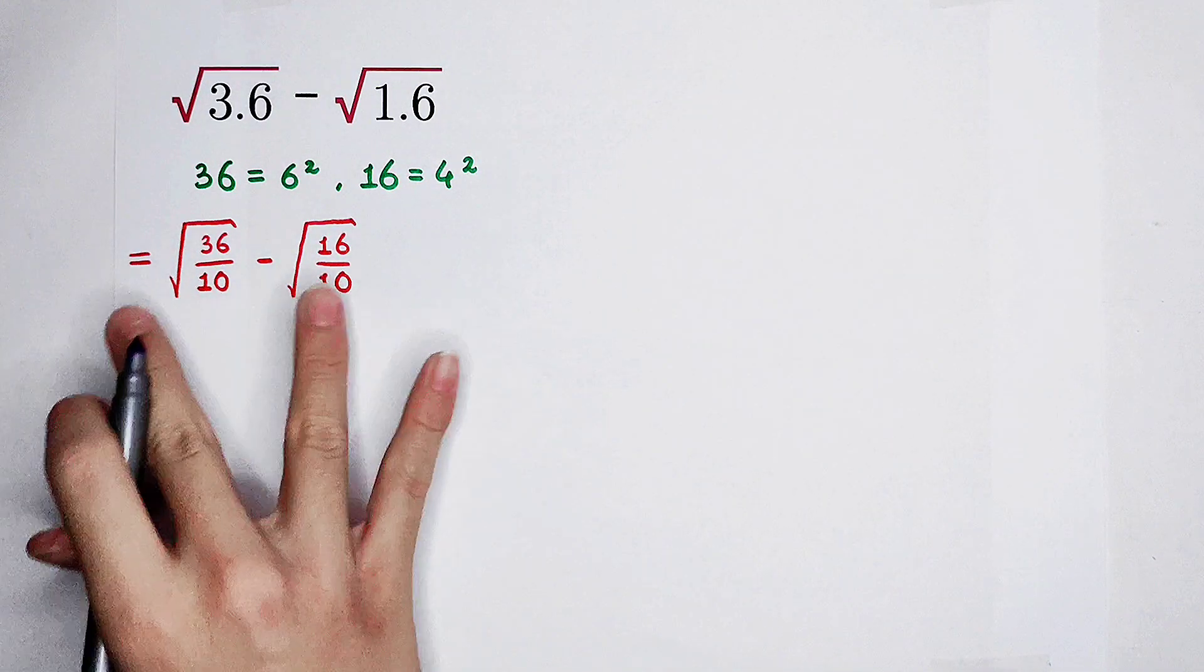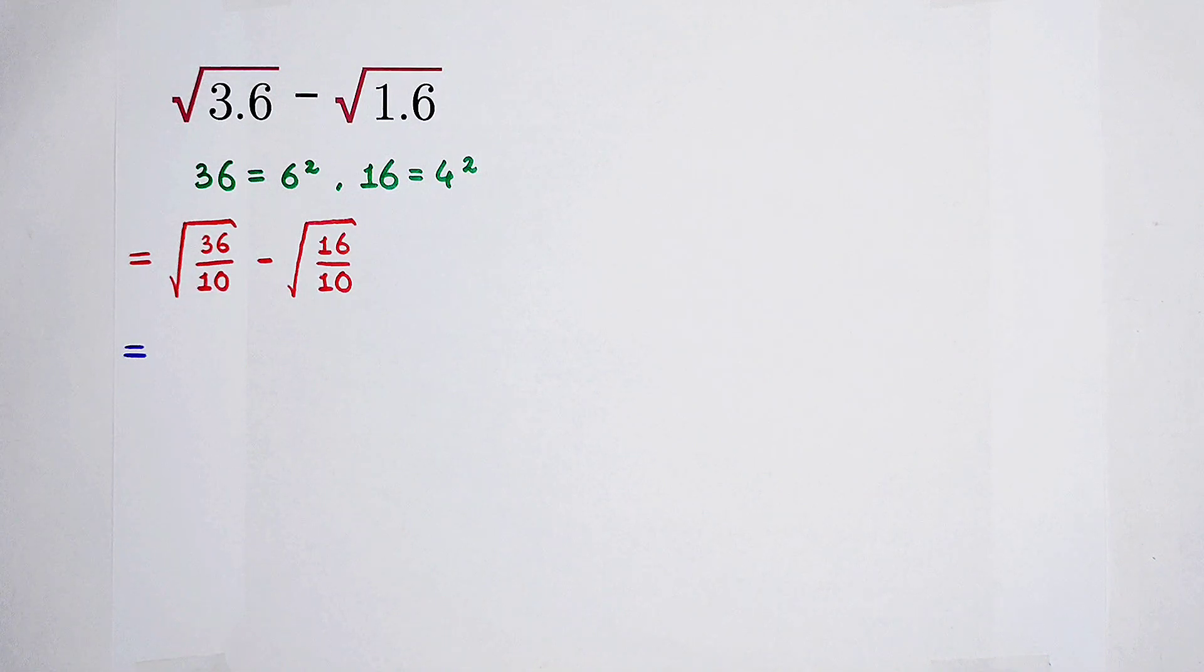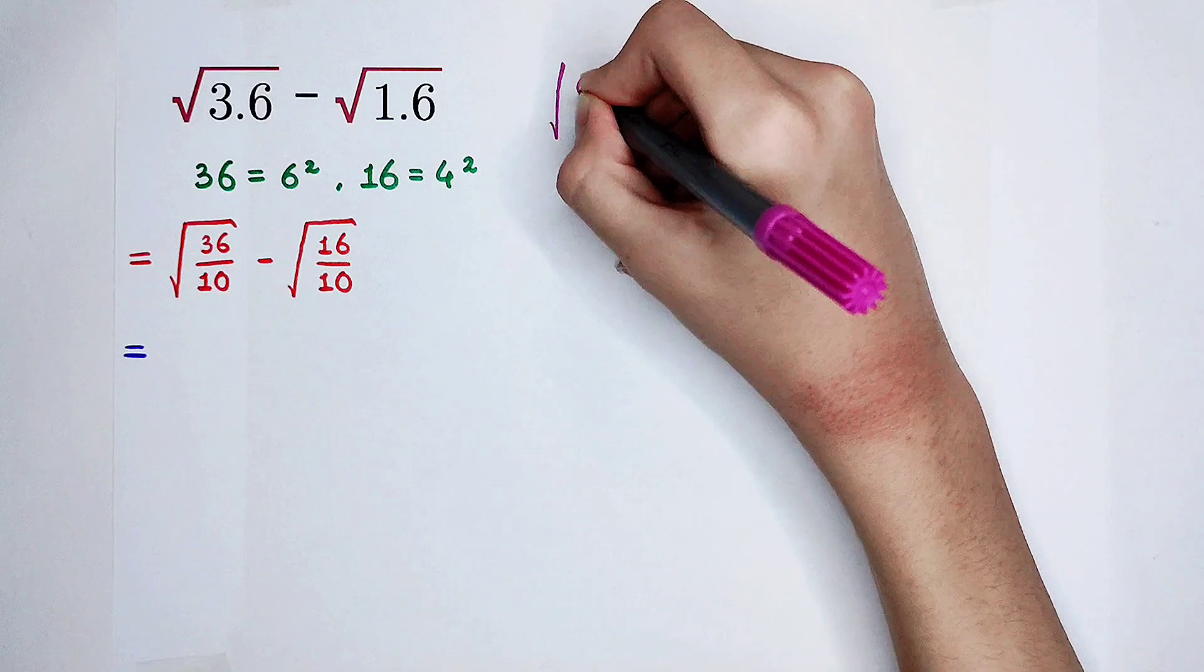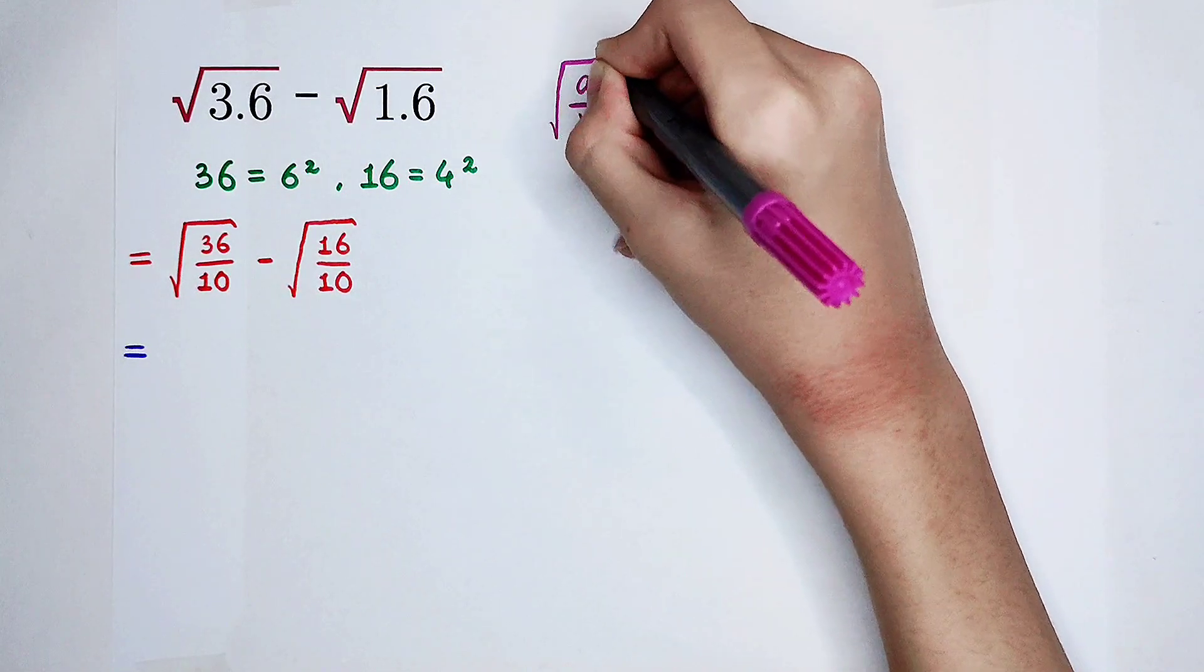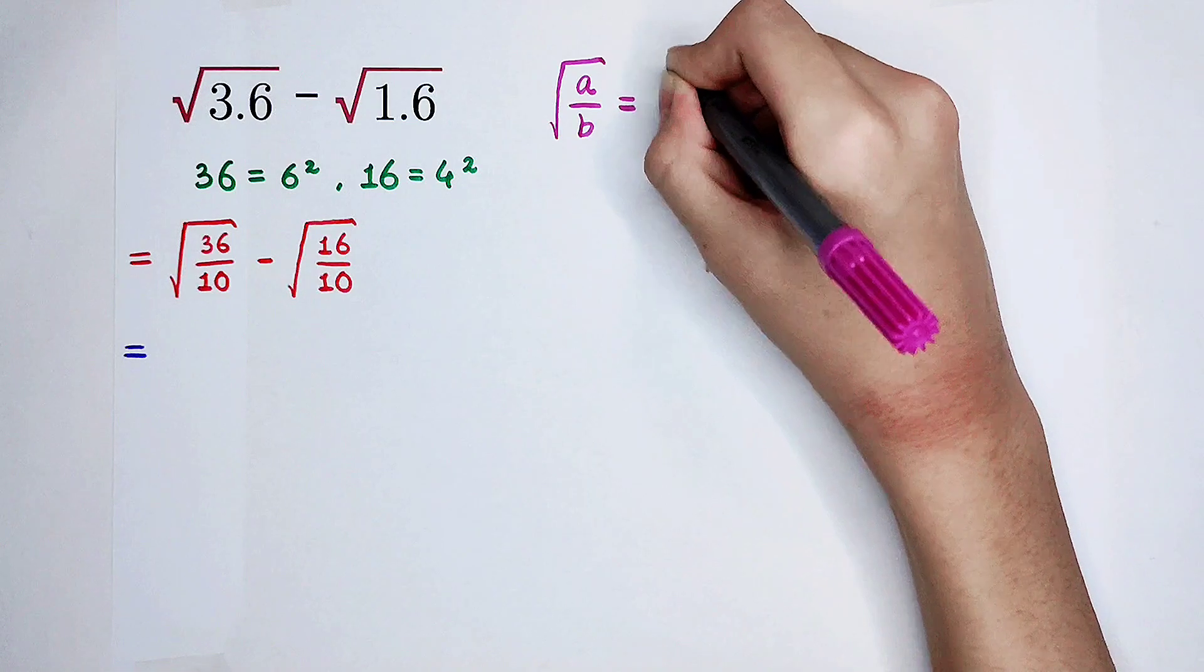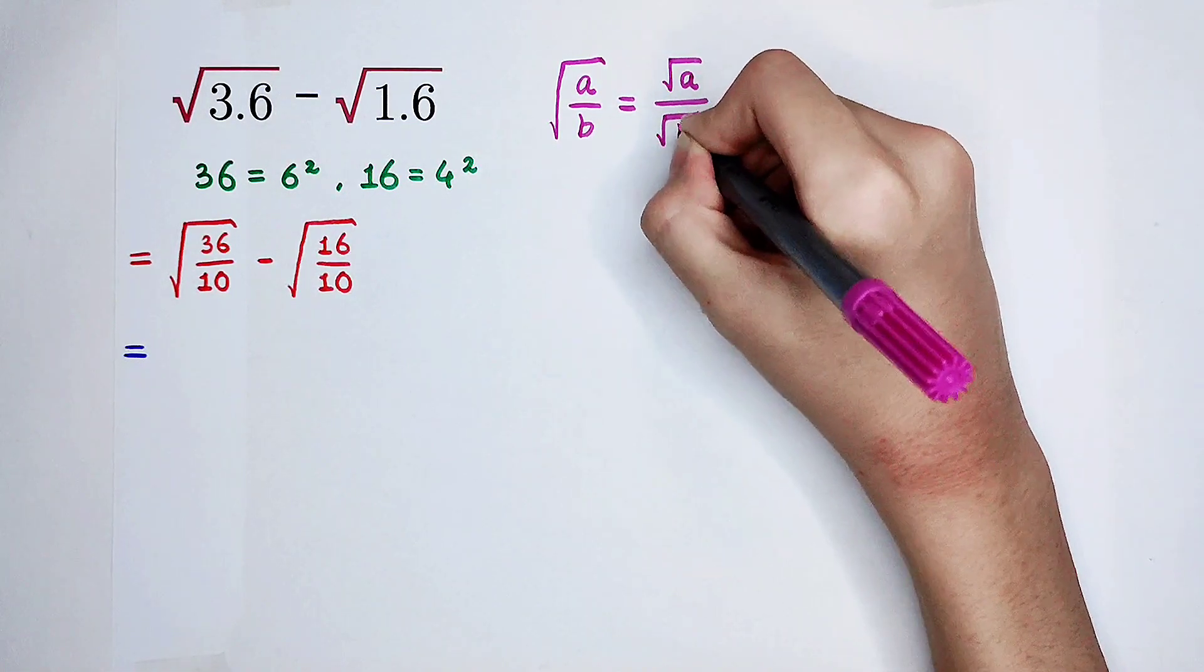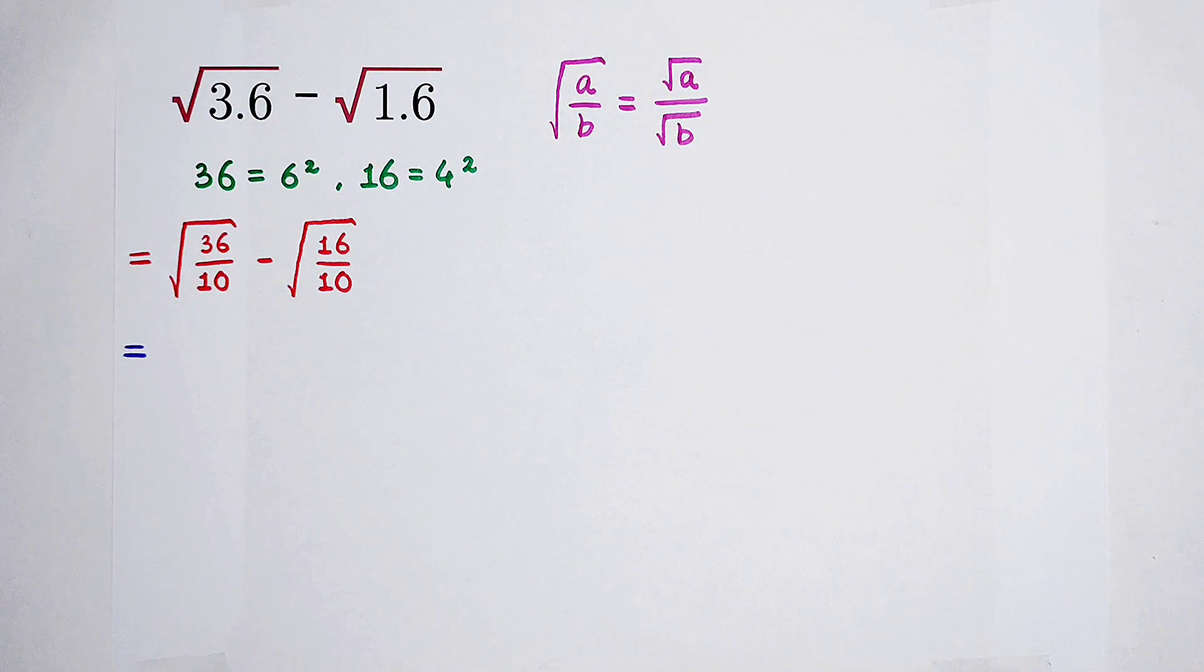Then, how should we deal with these two guys? I have to use a formula. The square root of a over b, it is equal to square root of a over square root of b. This, you have to memorize.